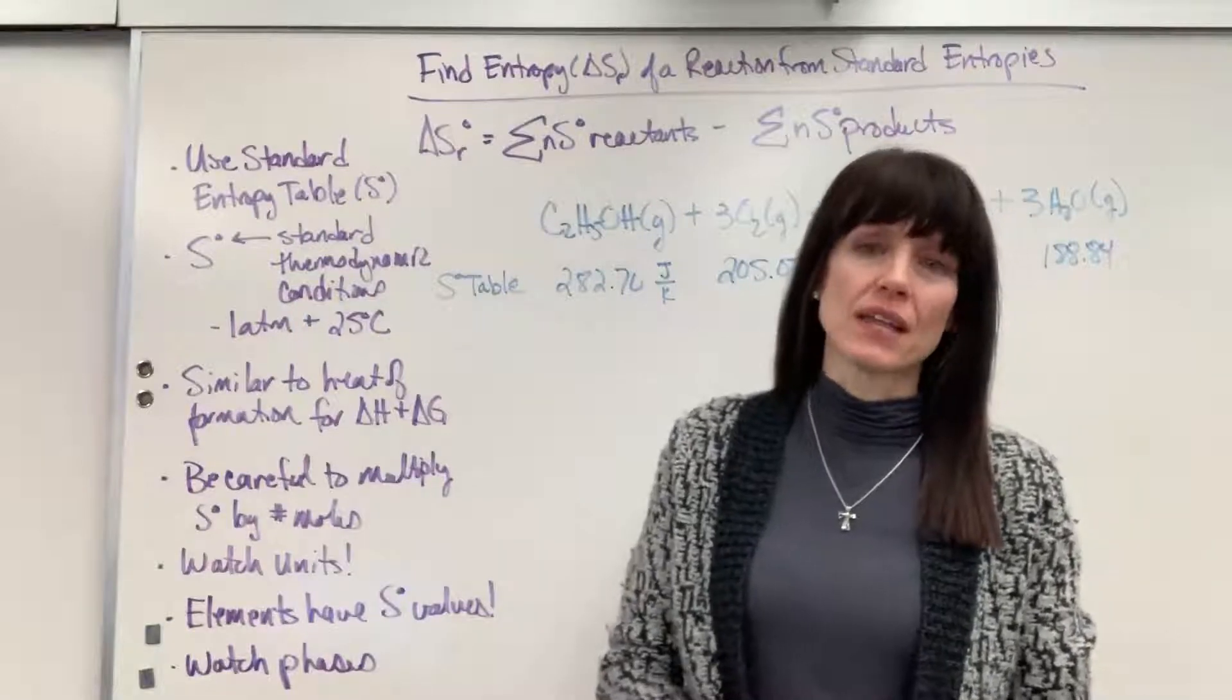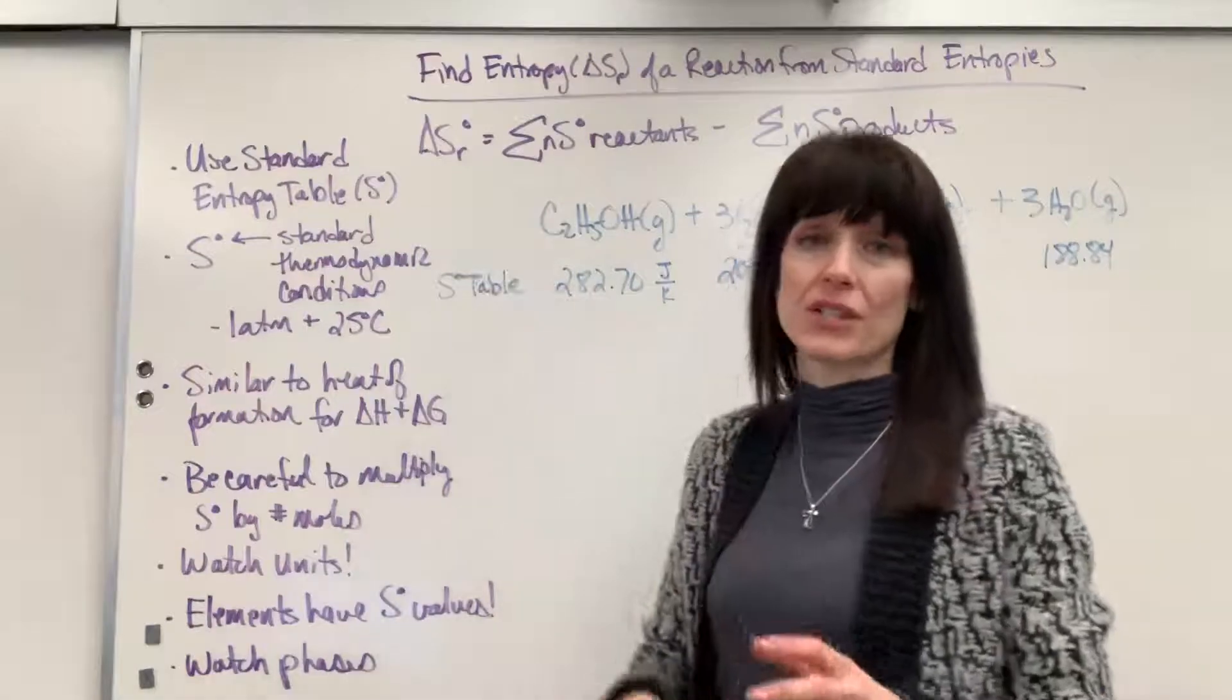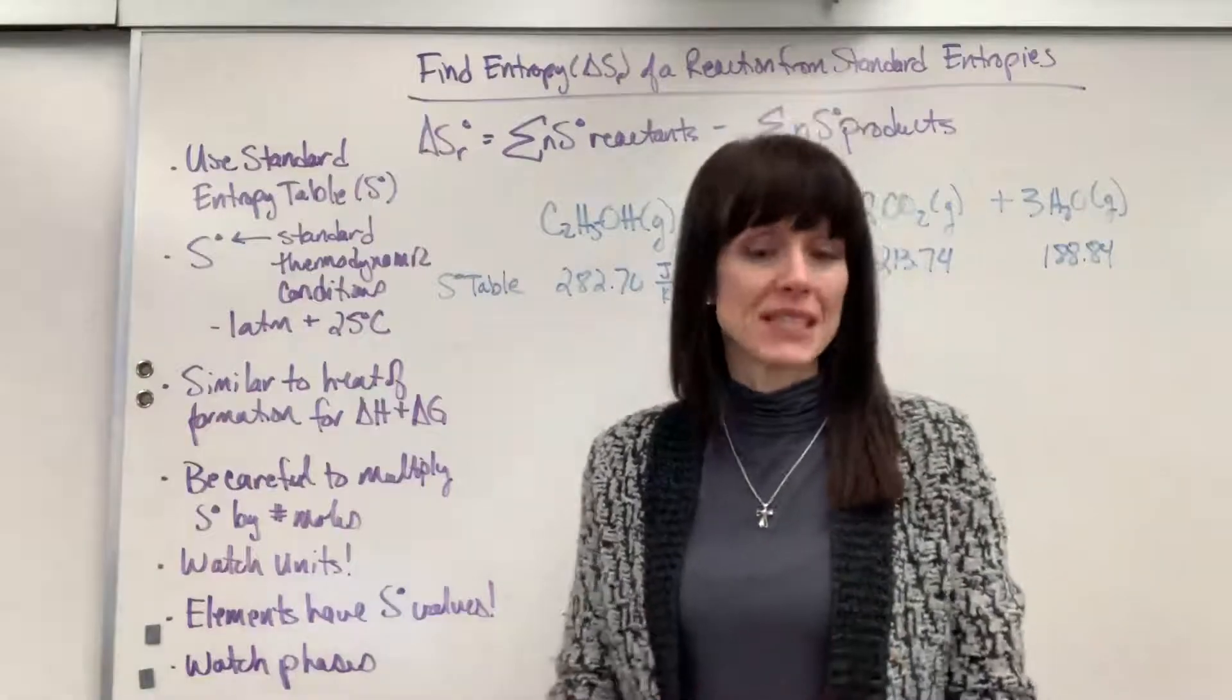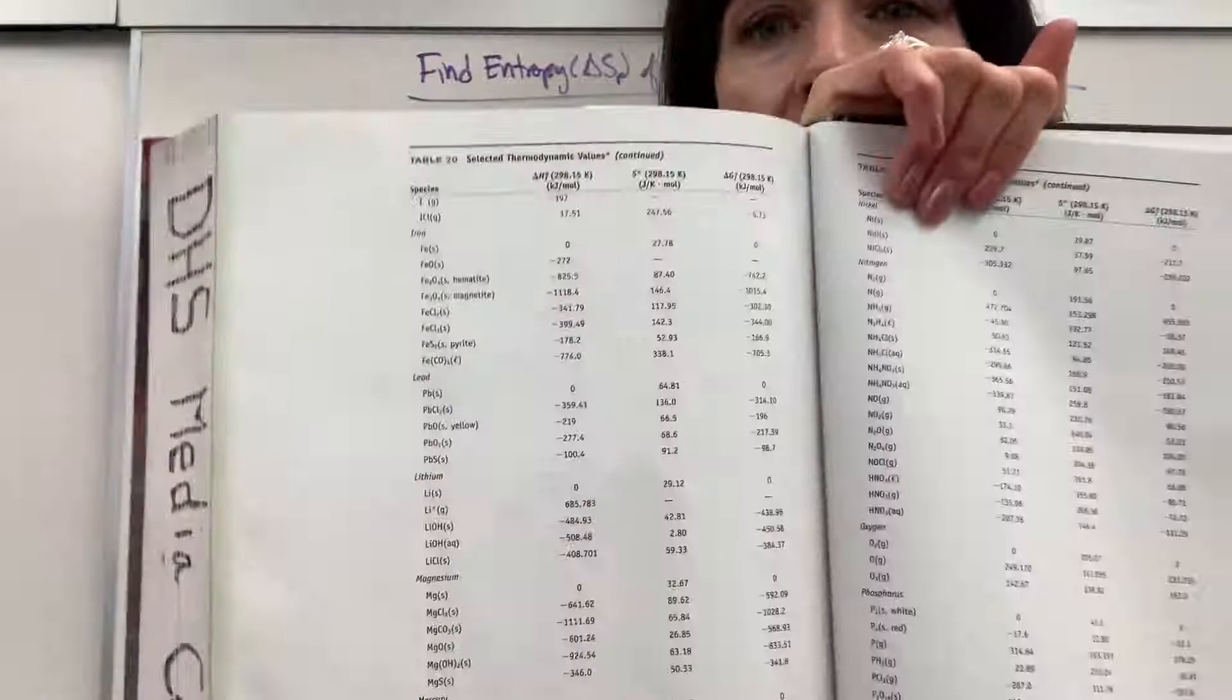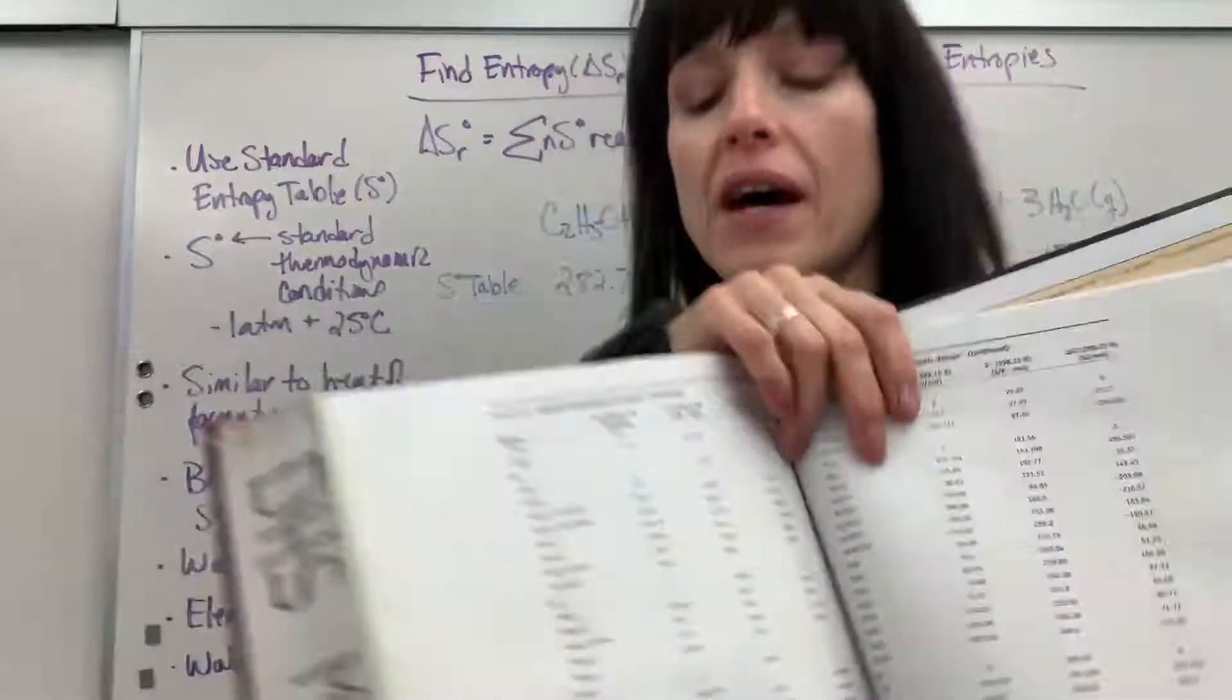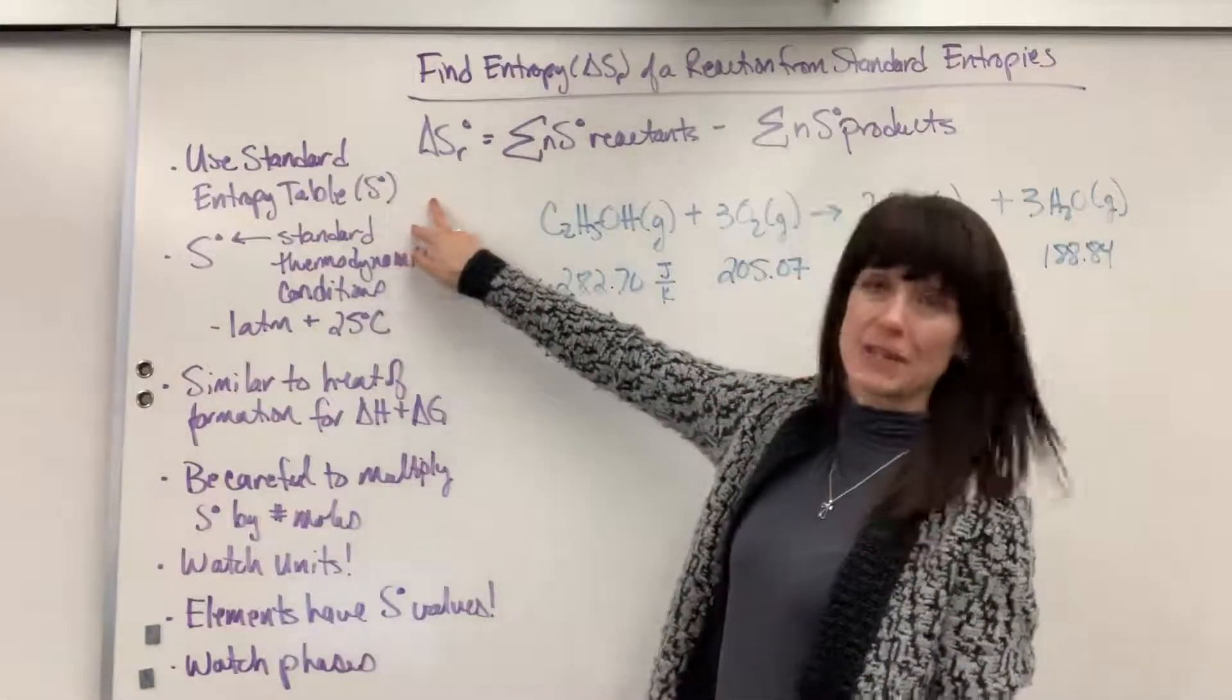Hi, I'd like to show you how to calculate the change in entropy, delta S, for a reaction using standard entropies. Now, you're going to get the standard entropies from a table, and I want to show you an example of a table. This is just the back of one of my textbooks right here. You can see all of these tables, see right there where it says S? That is going to be your standard entropy table.